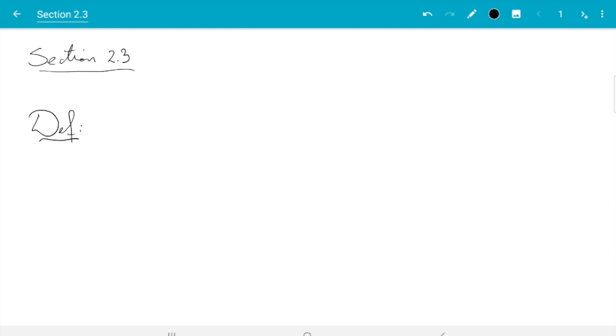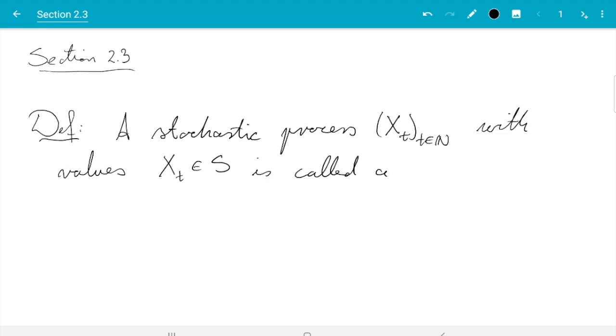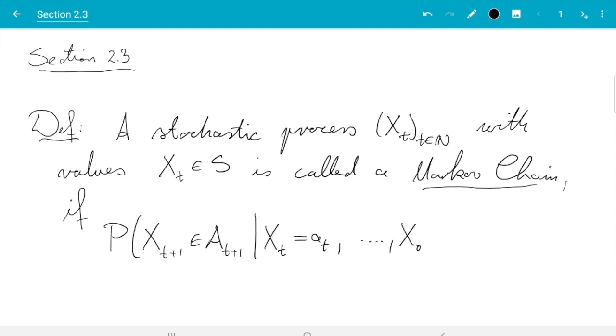The formal definition of a Markov chain says: a stochastic process (Xt) where t is in the positive integers with values Xt in S is called a Markov chain if the following condition holds, namely if P(Xt+1 ∈ At+1 | Xt = at, ..., X0 = a0) equals